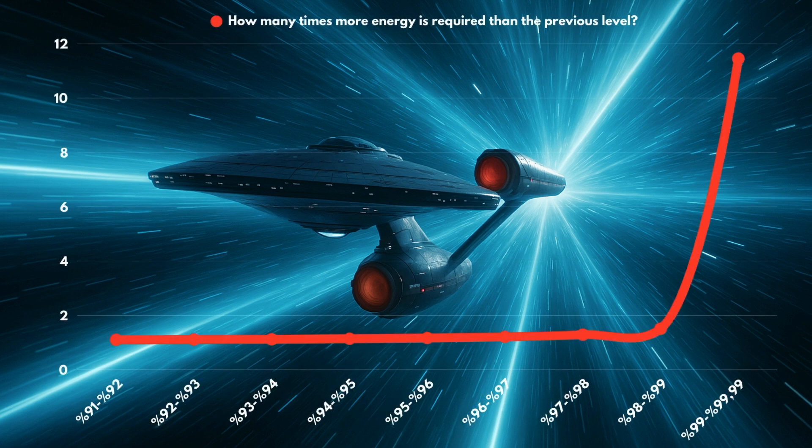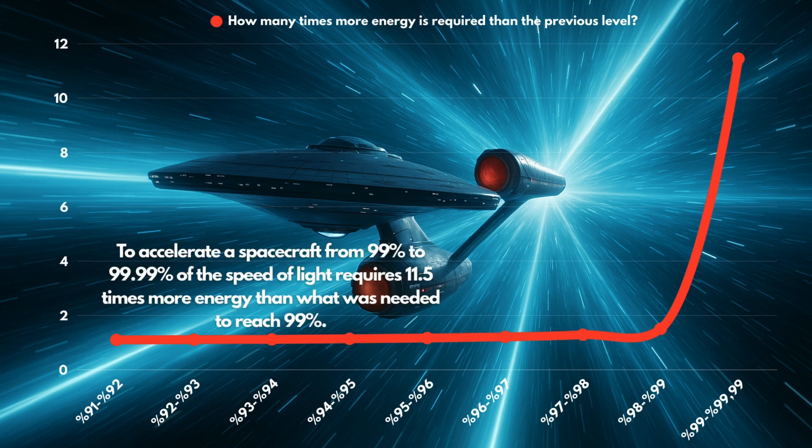More speed means more mass, means more energy. At 99.9%, you'd need 22 times its rest mass in energy. Push it to 99.99%, and you're beyond the total energy Earth produces in a year.